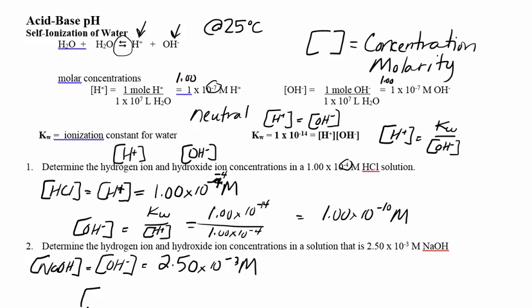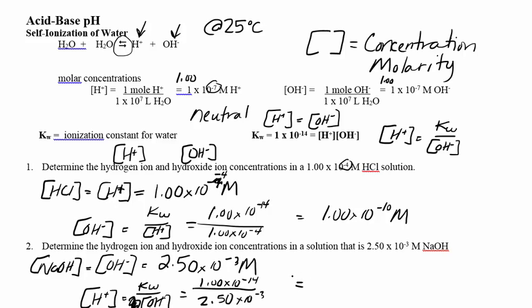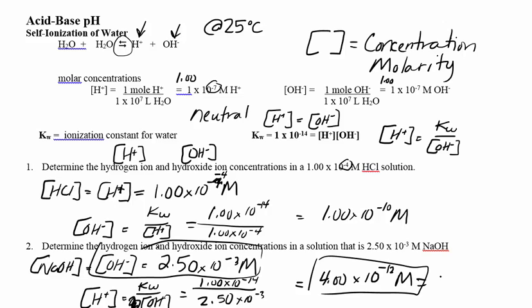But I also asked for the hydrogen. Use KW over hydroxide: 1×10⁻¹⁴ divided by 2.5×10⁻³. That gives you 4×10⁻¹². So you have two answers: hydroxide is 2.5×10⁻³, and hydrogen is 4×10⁻¹².